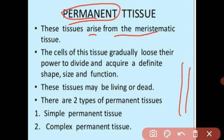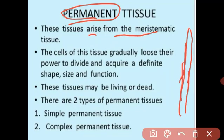As the plant grows, the meristematic tissue takes a permanent shape and size. This mature meristematic tissue is called permanent tissue.